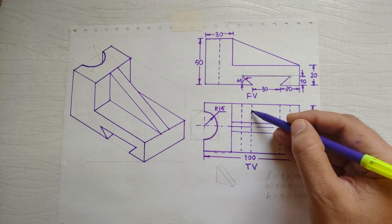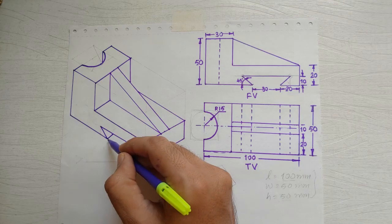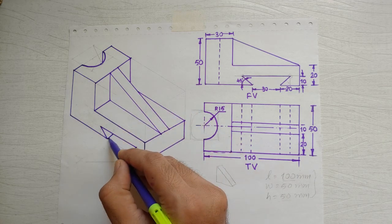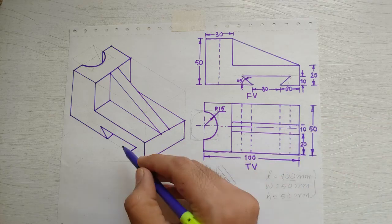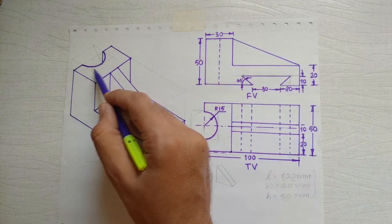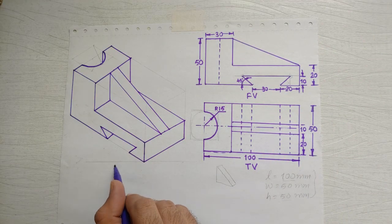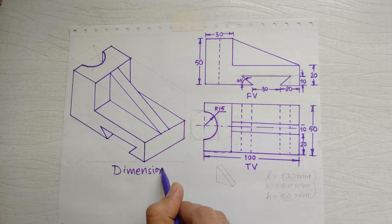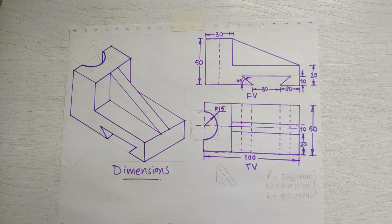We can now correlate with the two hidden lines shown — they correspond to these two edges. When looking from the top, two edges are not visible, giving two hidden lines. From the front view, the semicircular hole is not visible, giving another hidden line. The problem is now complete. Practice at home to get a better understanding of such objects.